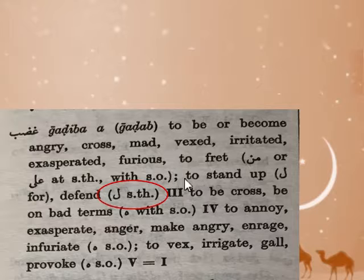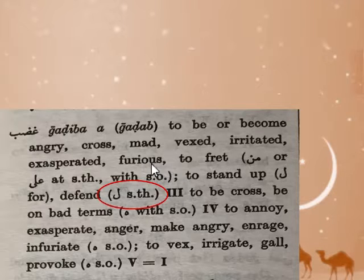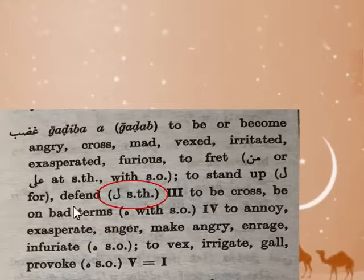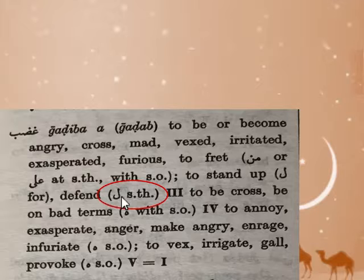Notice here there is a semicolon, and this is very important. A semicolon distinguishes between two different uses of a word. Everything before the semicolon — be angry, furious, exasperated — they all mean the same thing. After the semicolon: to stand up for, to defend — that's a different meaning. So the semicolon is important for determining where there are actually two different uses.